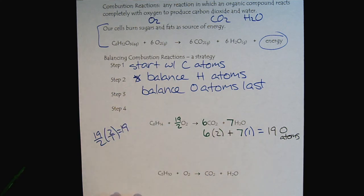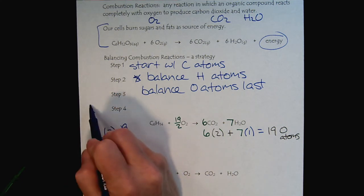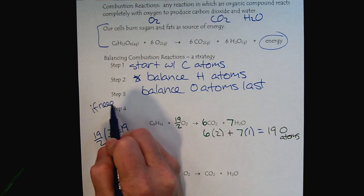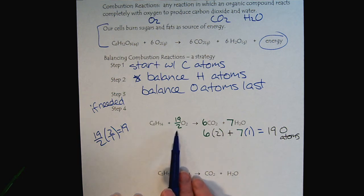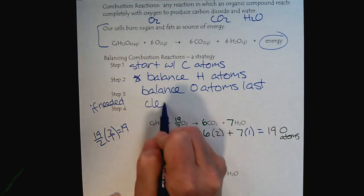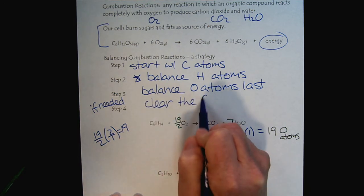That leads us to the last step. This is if needed. We don't always need step 4, but in this case, we do. To balance the reaction, we've put a fractional coefficient. But we know that we're not allowed to have fractional coefficients in a properly balanced equation. So, we're going to have to clear the fractional coefficient.